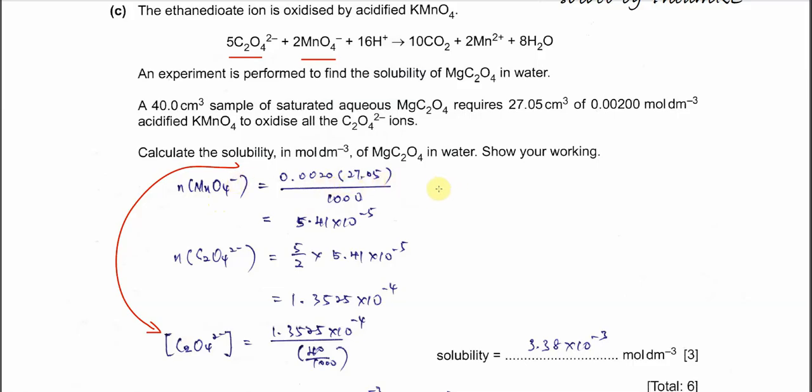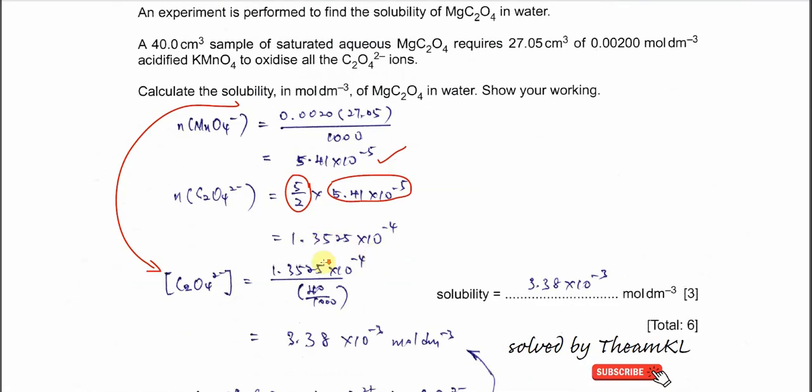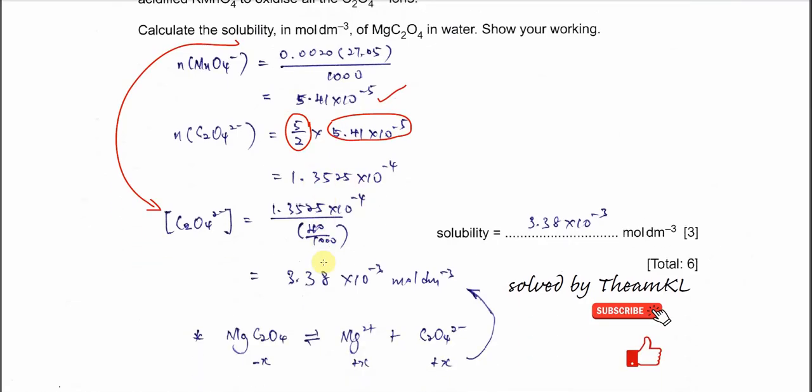Use MV over 1000, so 0.002 times 27.05 over 1000, so you get the moles of MnO₄⁻. From the equation we know that the moles of ethanedioate is larger. So therefore we use the moles of permanganate ions times 5 over 2, because the moles of ethanedioate is larger by this ratio 5 over 2. So you get 1.3525 times 10⁻⁴.